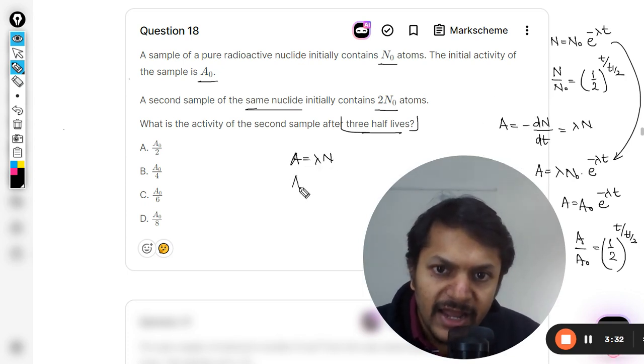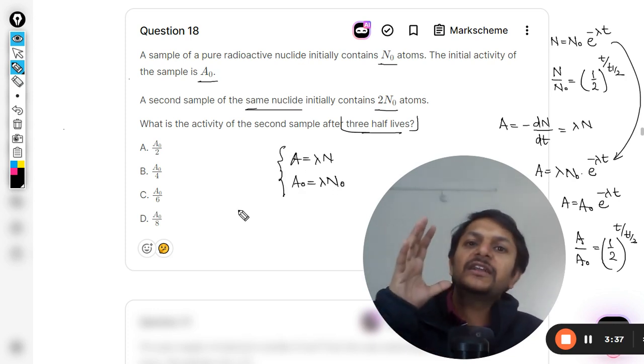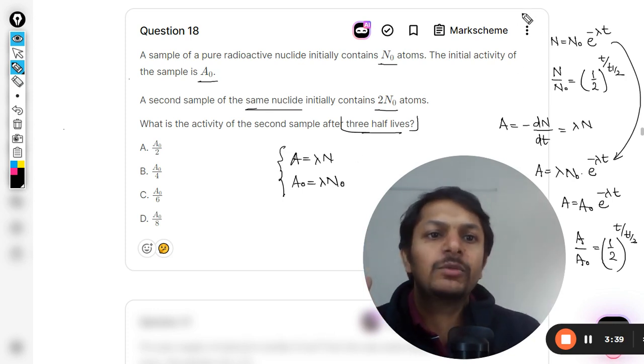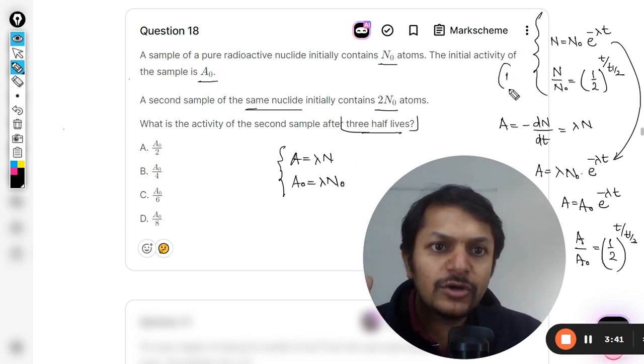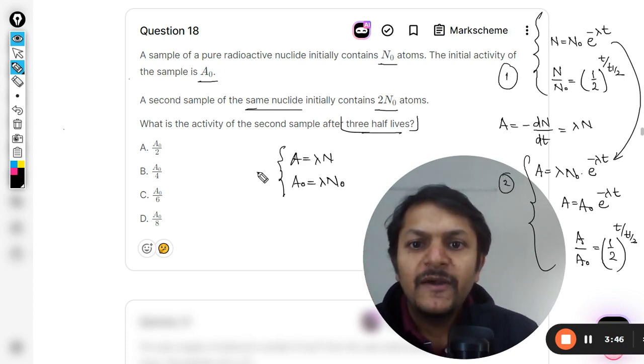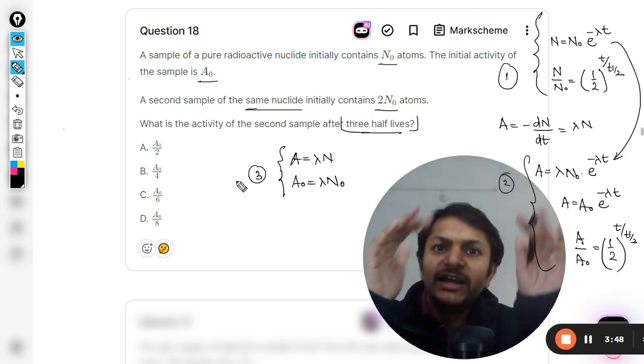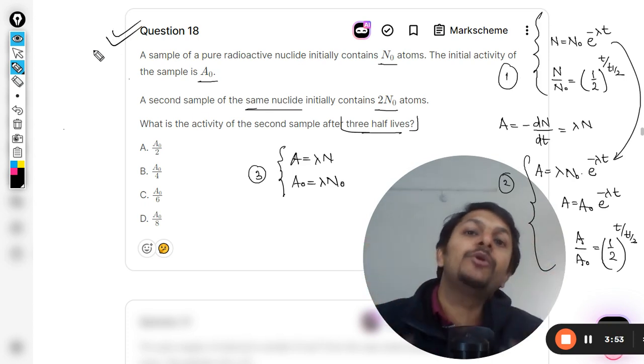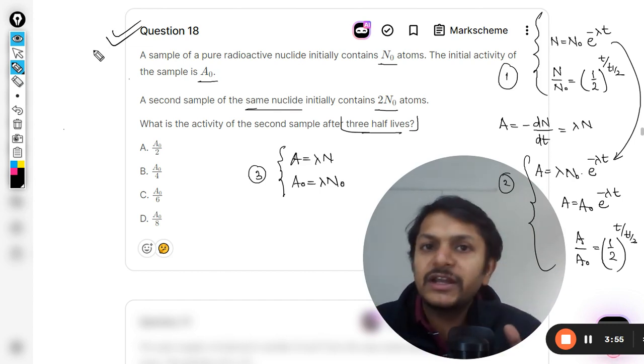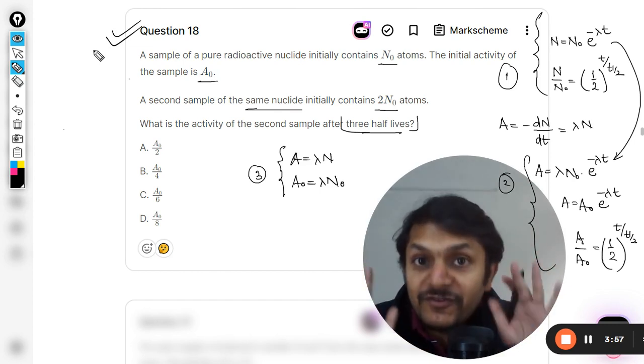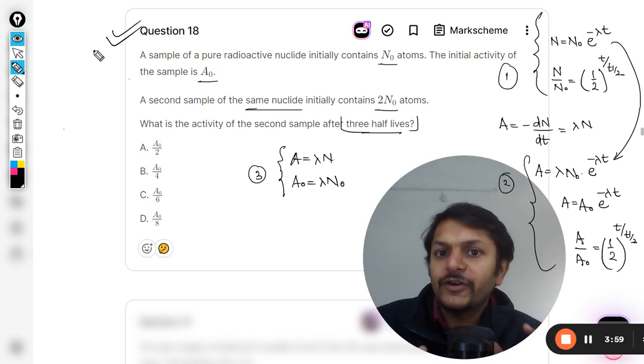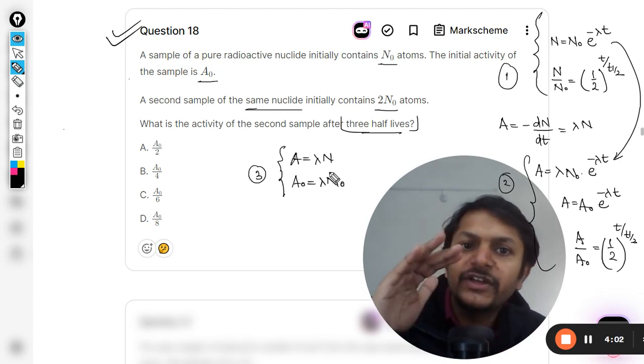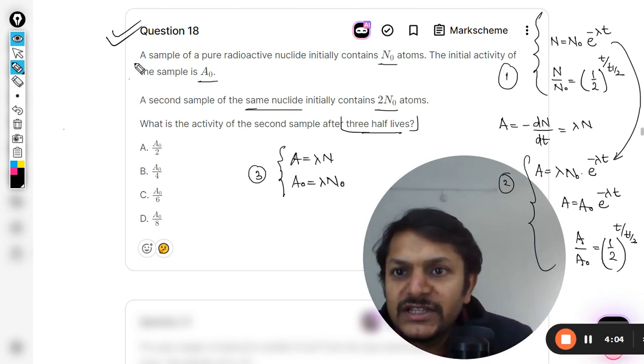These are the most important formulas. Number one: you are going to comment on the number of nuclei. Number two: you are going to comment on the activity of the sample. Number three: how to relate these two. This question is very important—you must not neglect it and you must do this five times at least. This is that kind of question.